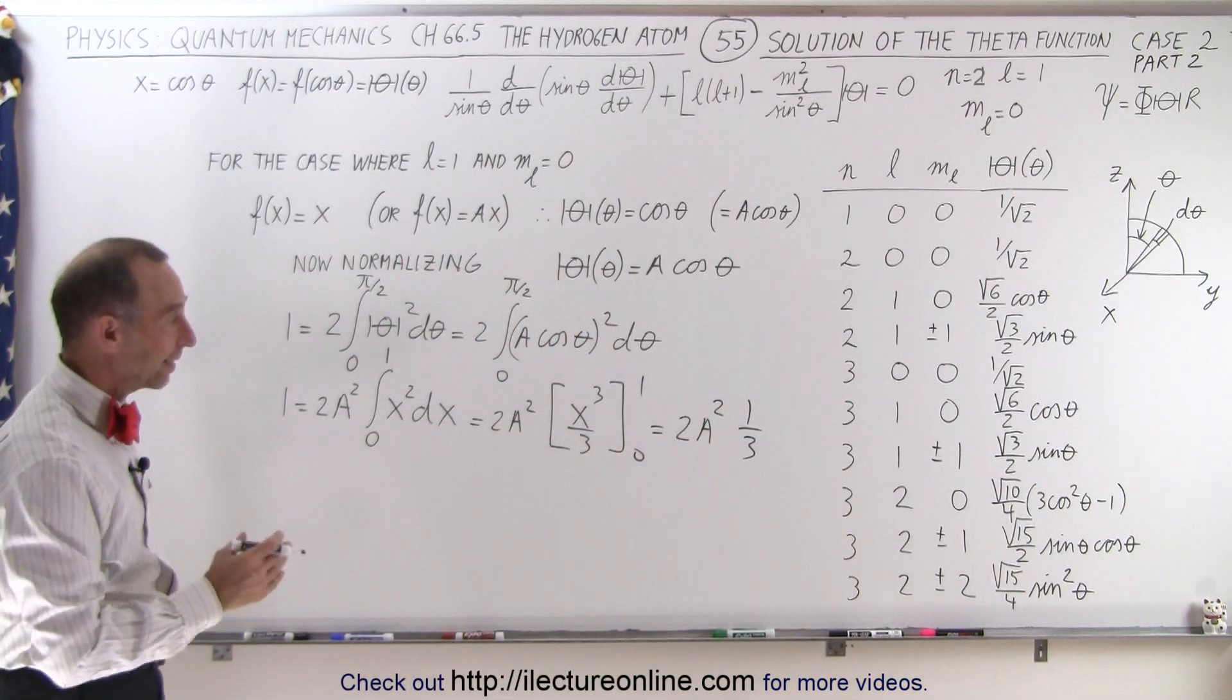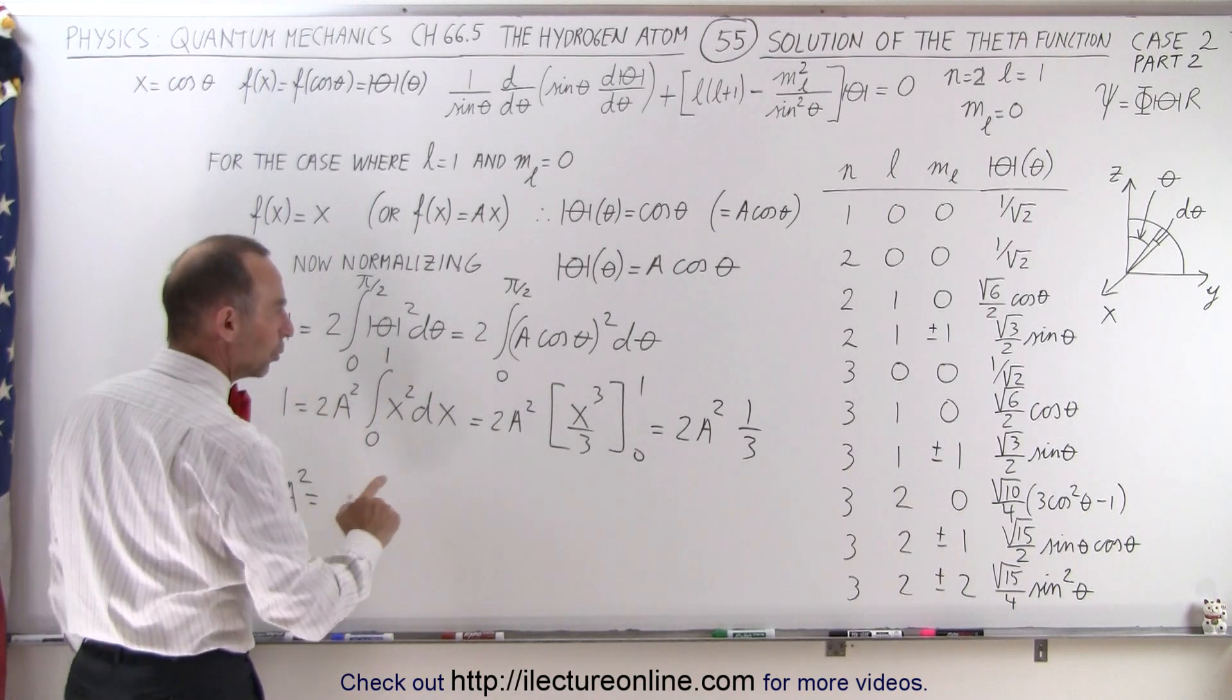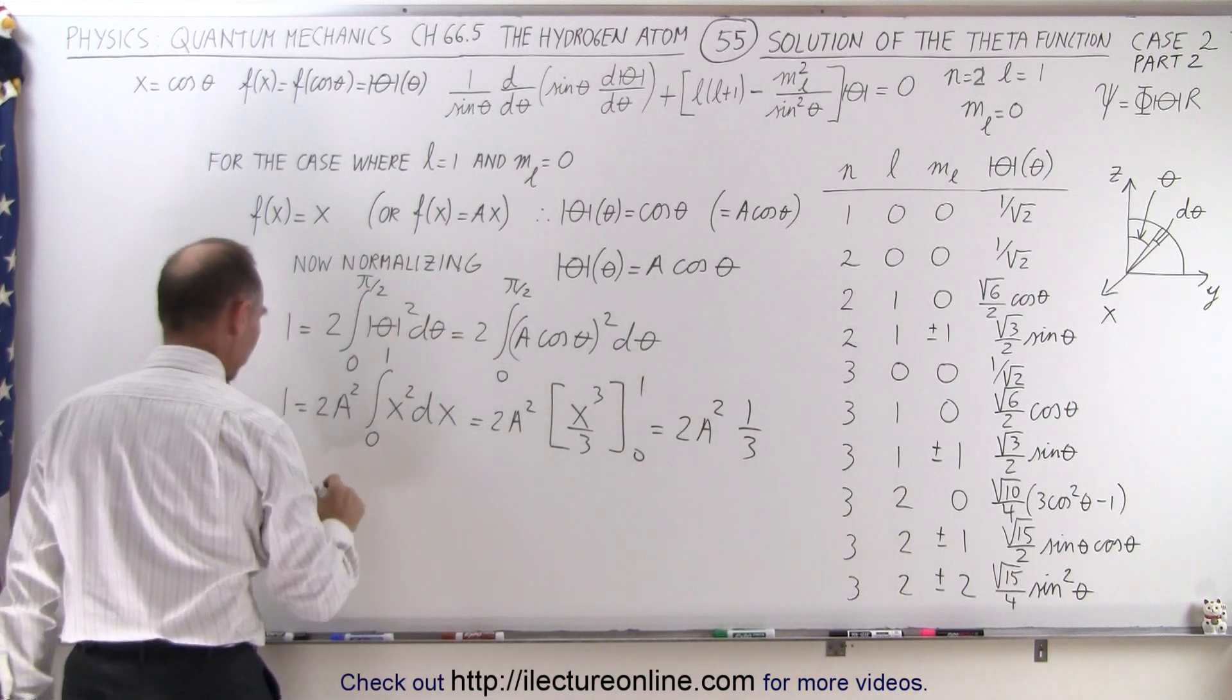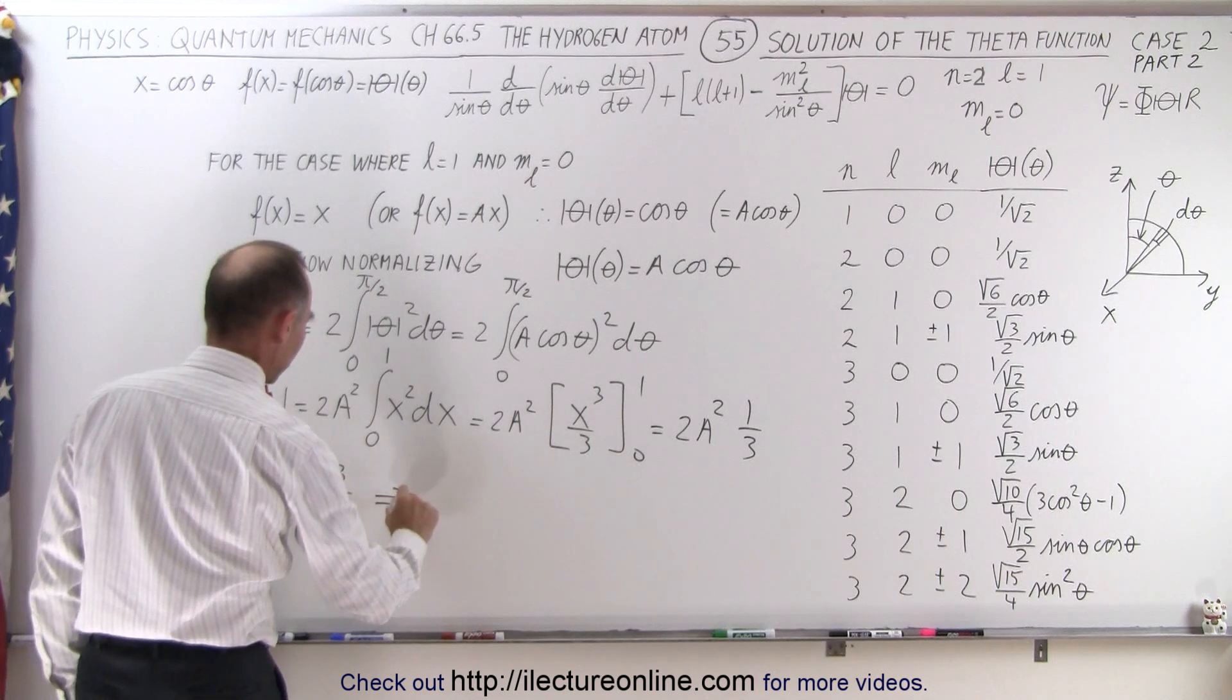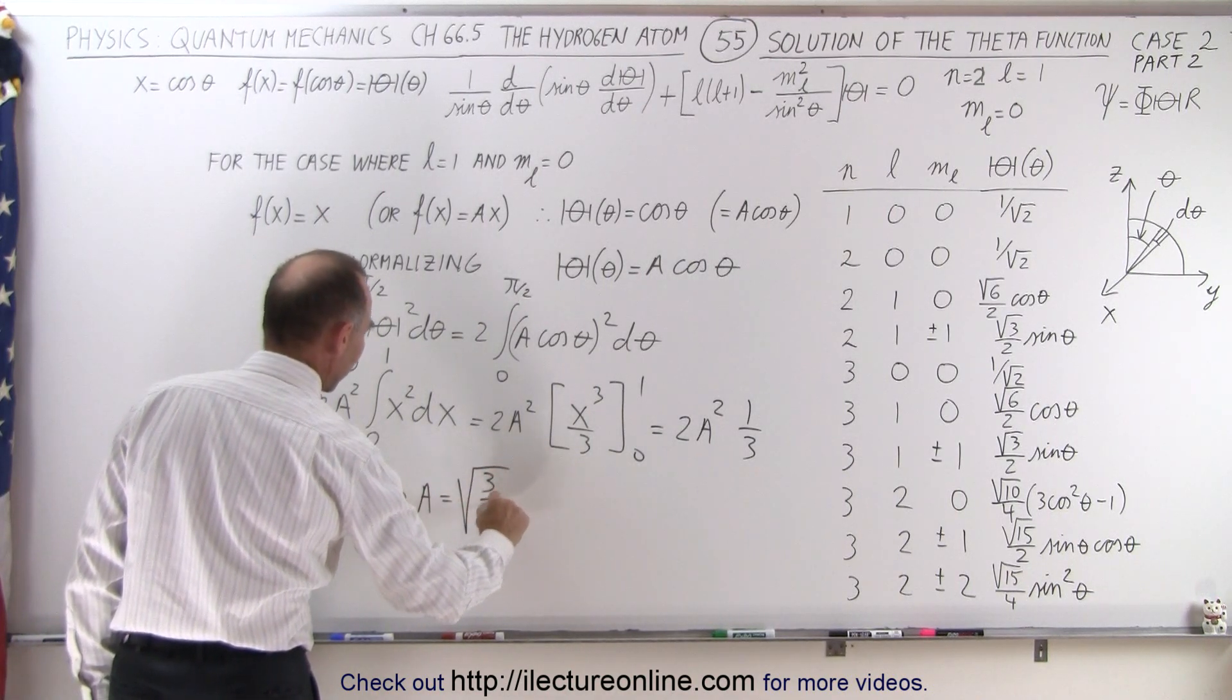So now we need to isolate a. So we end up with a squared is equal to, let's see here, bring the three across, bring the two down, so that'll be three divided by two.